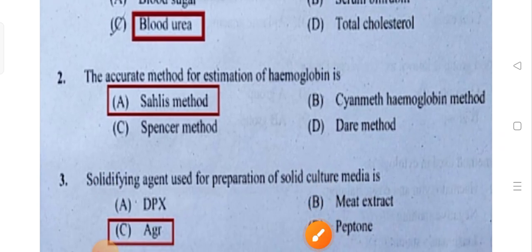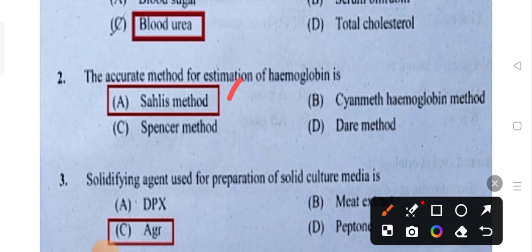The accurate method for estimation of hemoglobin is Saheli's method. The accurate, meaning exact result, method for HB estimation — Saheli's method is the correct answer.